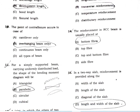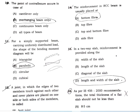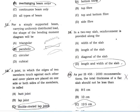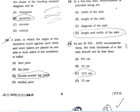The reinforcement in an RCC beam is usually placed at the bottom fiber. In a two-way slab, reinforcement is provided along both the length and width of the slab.